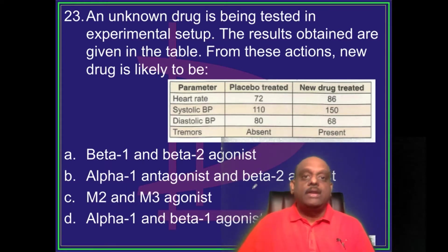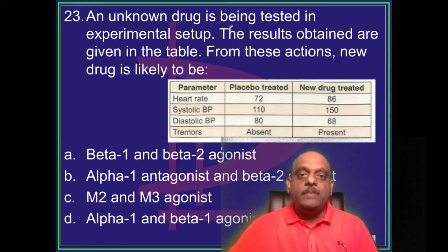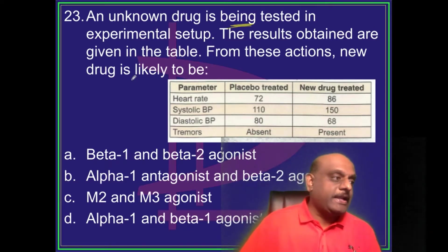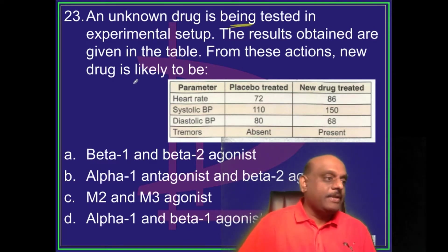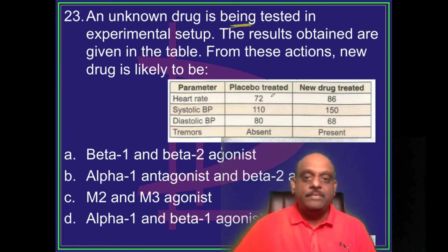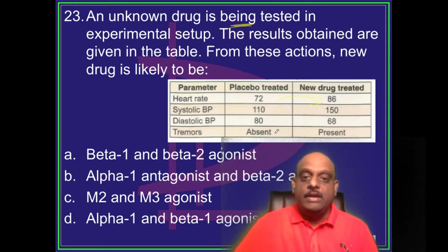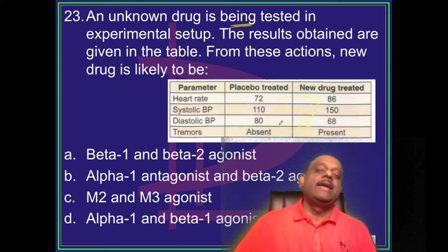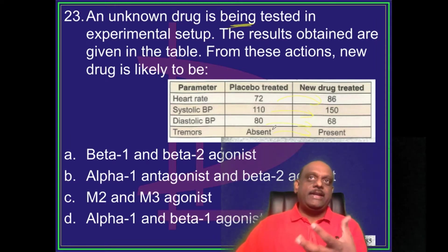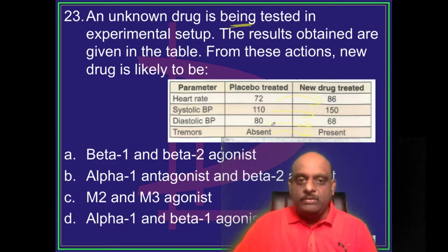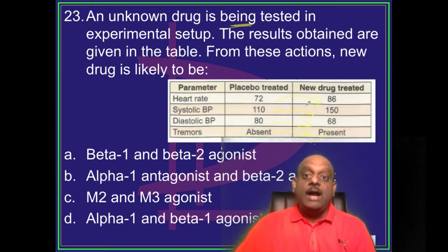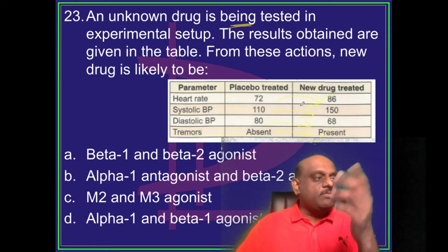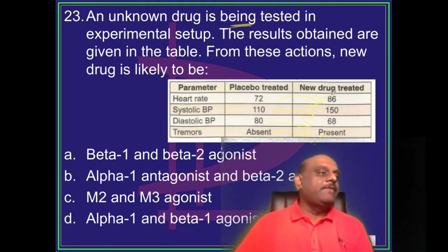An unknown drug is being tested in an experimental setup. The drug causes an increase in heart rate, tremors, increased systolic BP, and decreased diastolic BP, while total peripheral resistance comes down and vasodilatation occurs. What is the most likely drug? This is a very important question.